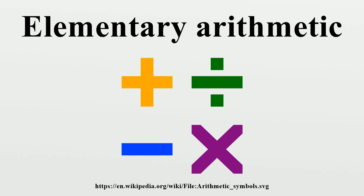The symbol for larger than is greater than. If a number is larger than another one, then the other is smaller than the first one. For example, 3 is smaller than 8 and 5 is smaller than 8. The symbol for smaller than is less than. A number cannot be at the same time larger and smaller than another number, neither can a number be at the same time larger than and equal to another number. Given a pair of natural numbers, one and only one of the following cases must be true: the first number is larger than the second, the first number is equal to the second, or the first number is smaller than the second.